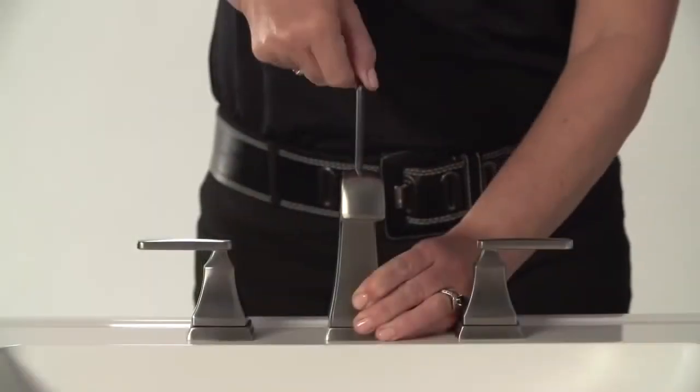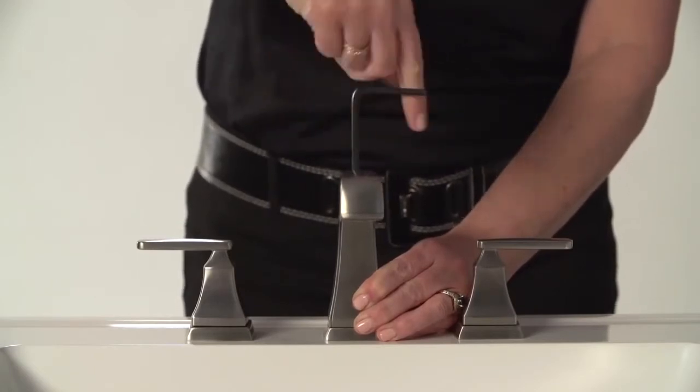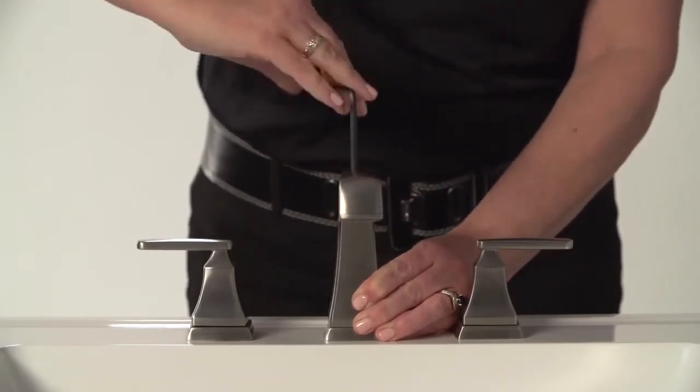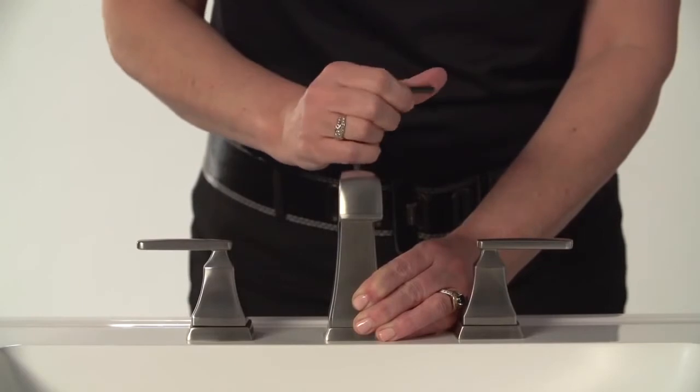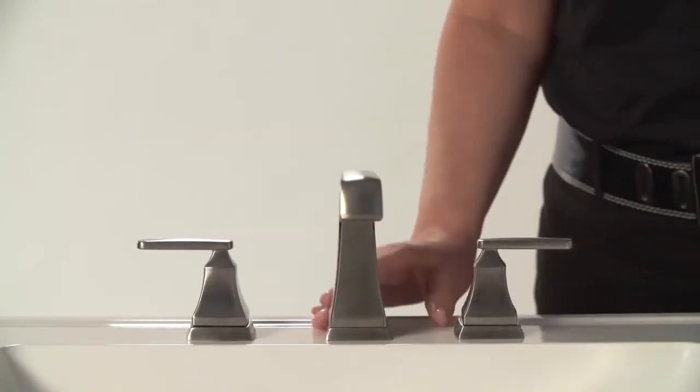Next, take the large allen wrench that has been provided and slide it into the lift rod hole on top of the spout. Line it up with the hex opening down inside the mounting shank and turn it until the body of the spout is tight against the base.